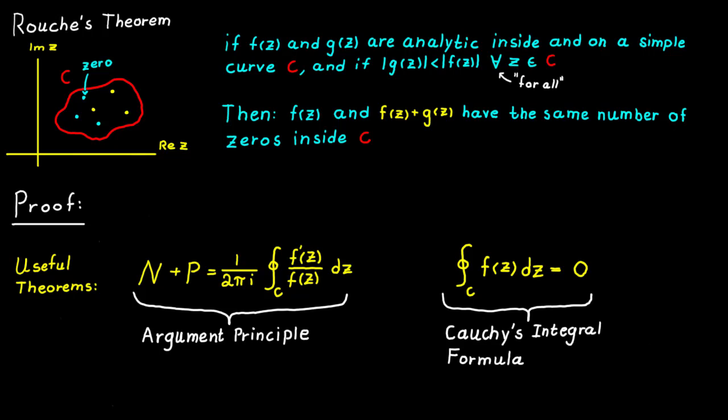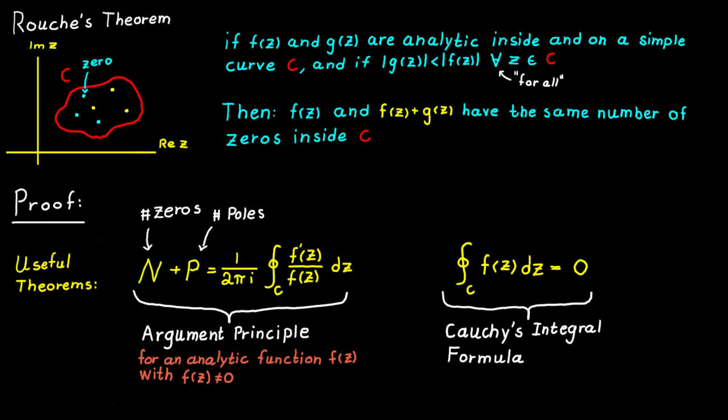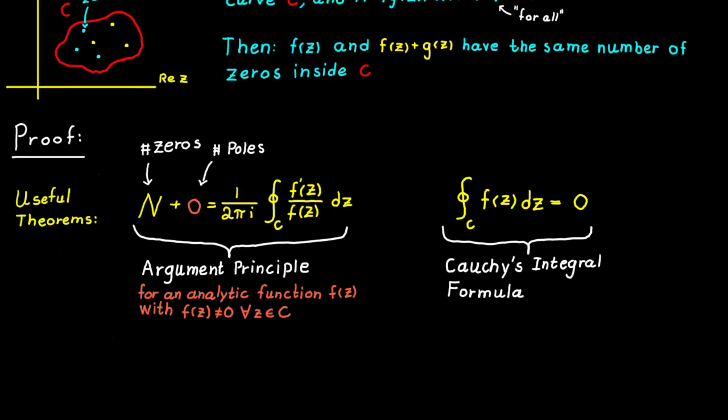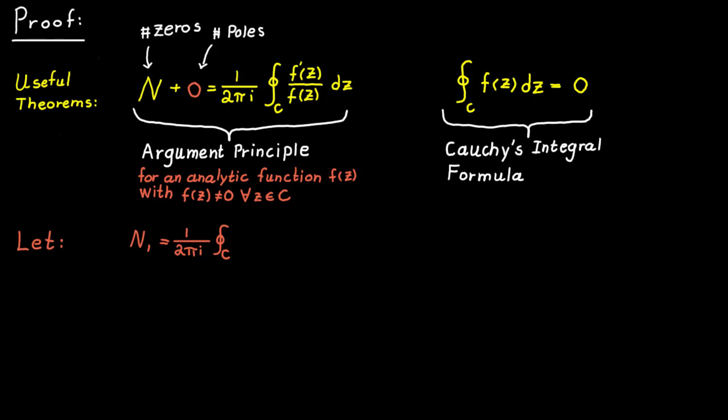Returning to the argument principle theorem: n stands for the number of zeros and p stands for the number of poles for a function. But if f is an analytic function which is not equal to zero on the curve c, the number of poles must be zero, so we can rewrite the expression accordingly. Let n1 be the number of zeros for f plus g, and n2 be the number of zeros for f.